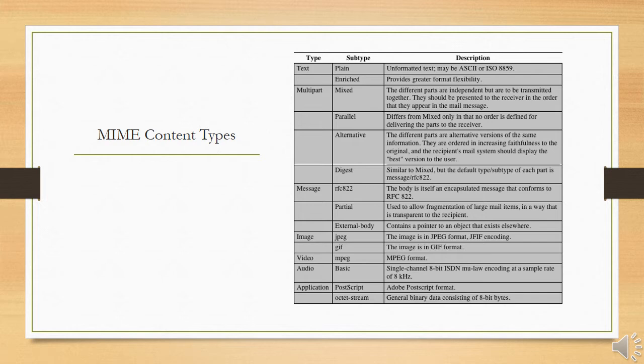For the multi-part parallel subtype, the order of the parts is not significant. If the recipient system is appropriate, the multiple parts can be represented in parallel. For example, a picture or text part could be accompanied by a voice commentary that is played while the picture or text is displayed.